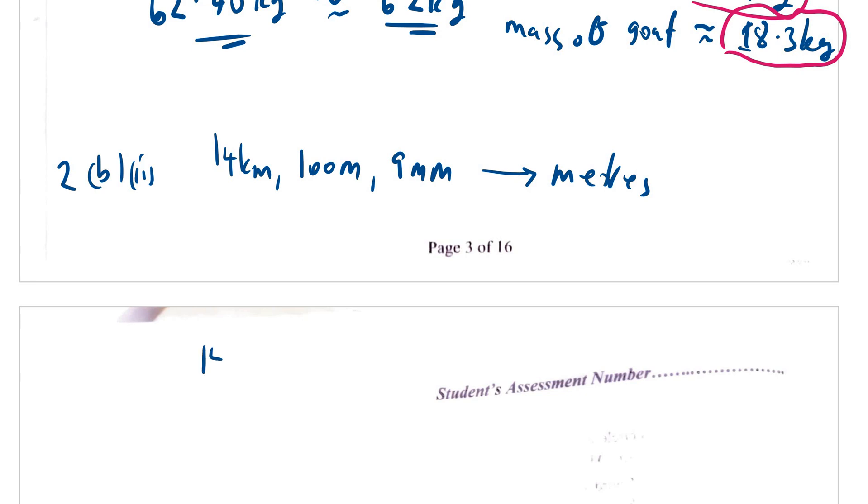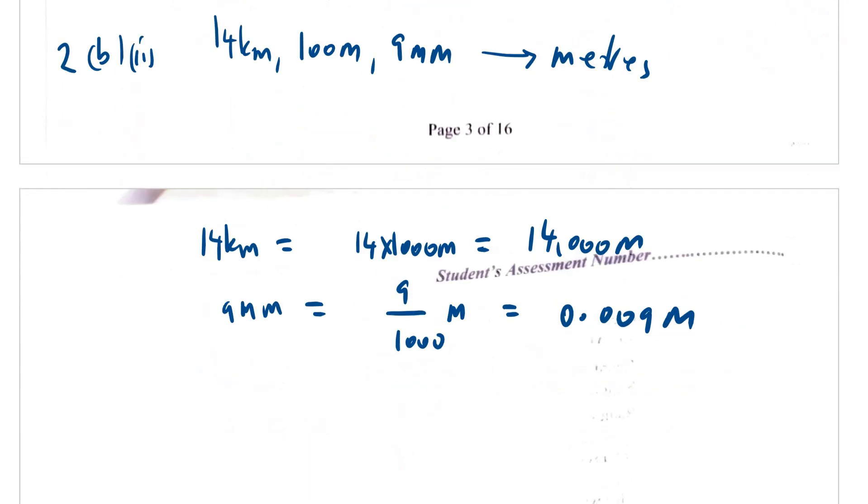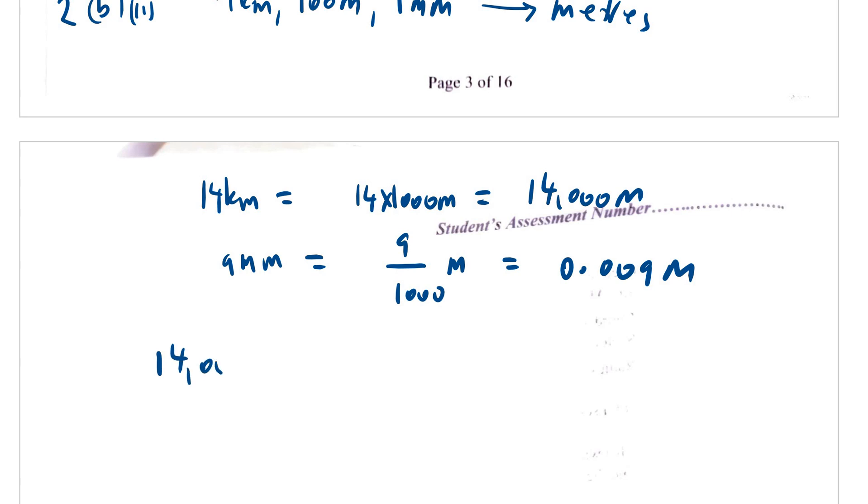For part two, convert the answer you obtained in 2b into meters. We have to change 14 kilometers, 100 meters, 9 millimeters into meters. Starting with 14 kilometers, this is 14 times 1000 meters, which is 14,000 meters. 100 meters stays as is. And 9 millimeters is 9 divided by 1000, which is 0.009 meters. Adding them together, you have 14,000 meters plus 100 meters plus 0.009 meters, which equals 14,100.009 meters.